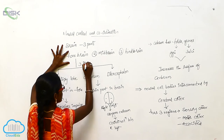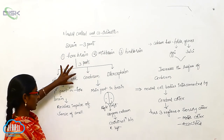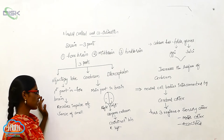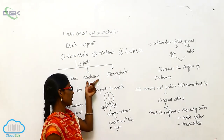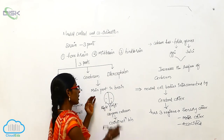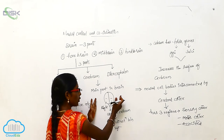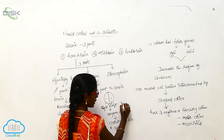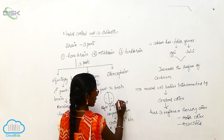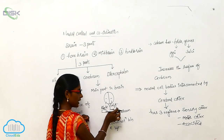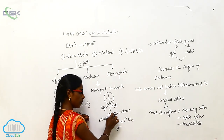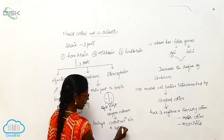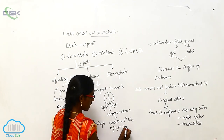The forebrain has three parts: the olfactory lobe, cerebrum, and diencephalon. The olfactory lobe receives the impulse of the sense of smell. The cerebrum is the main part of the brain, divided into right and left hemispheres, which are interconnected by the corpora callosum. This corpora callosum brings coordination between the right and left cerebrum.